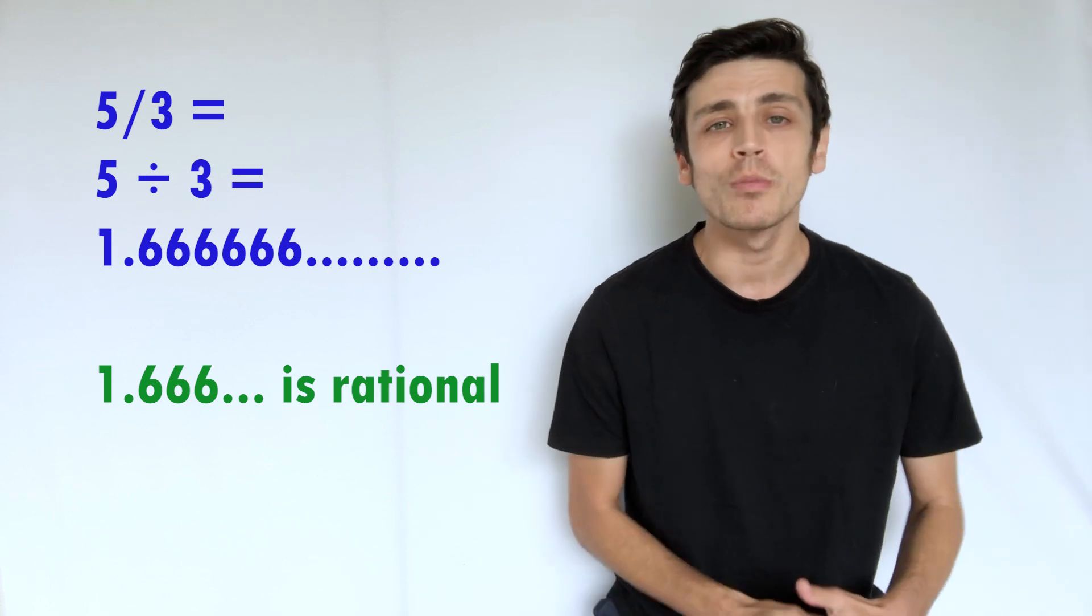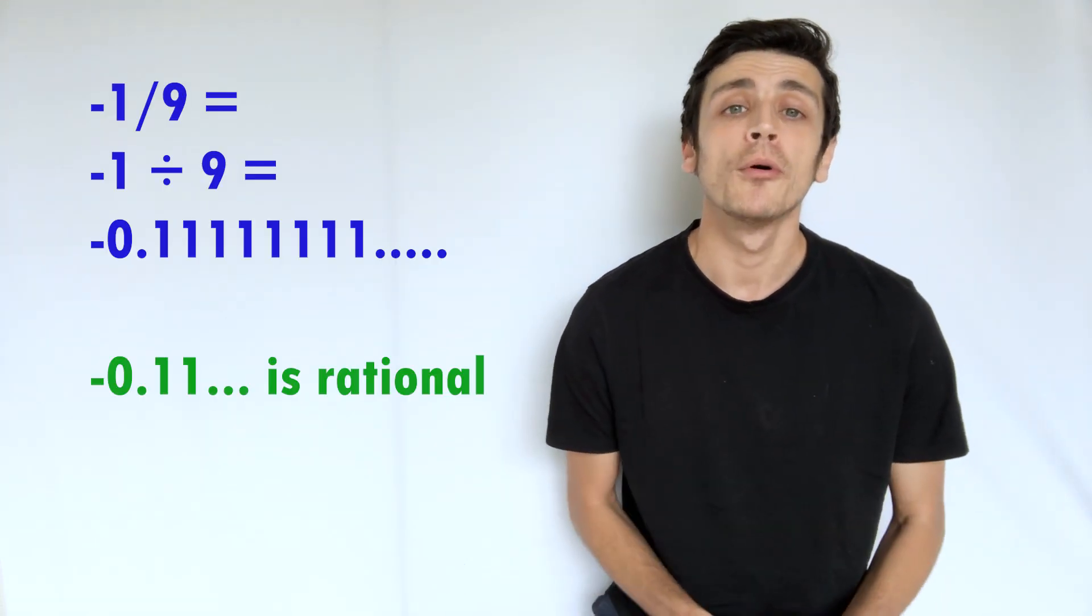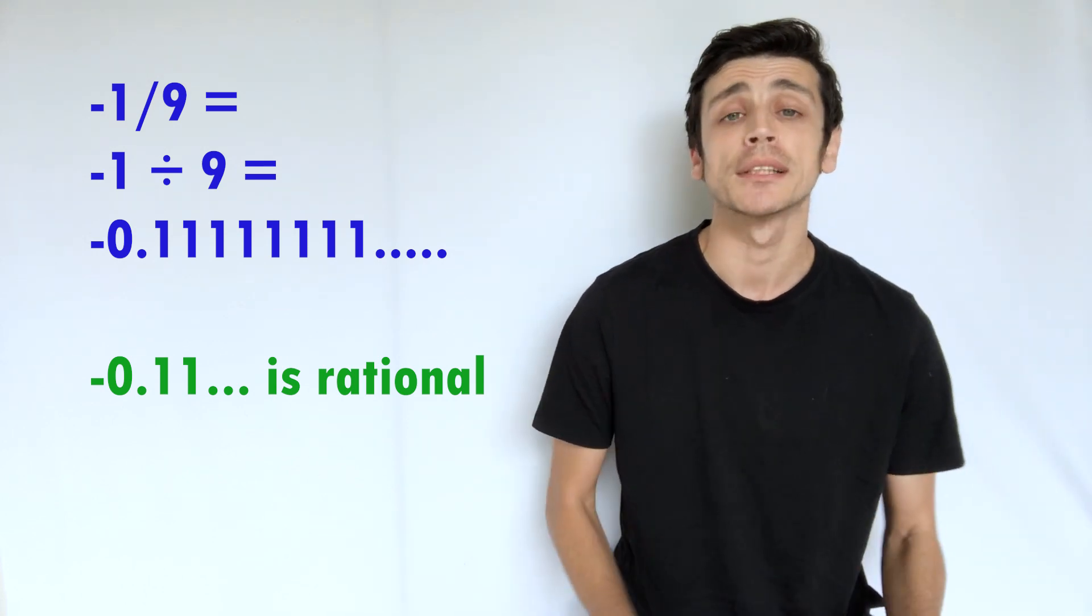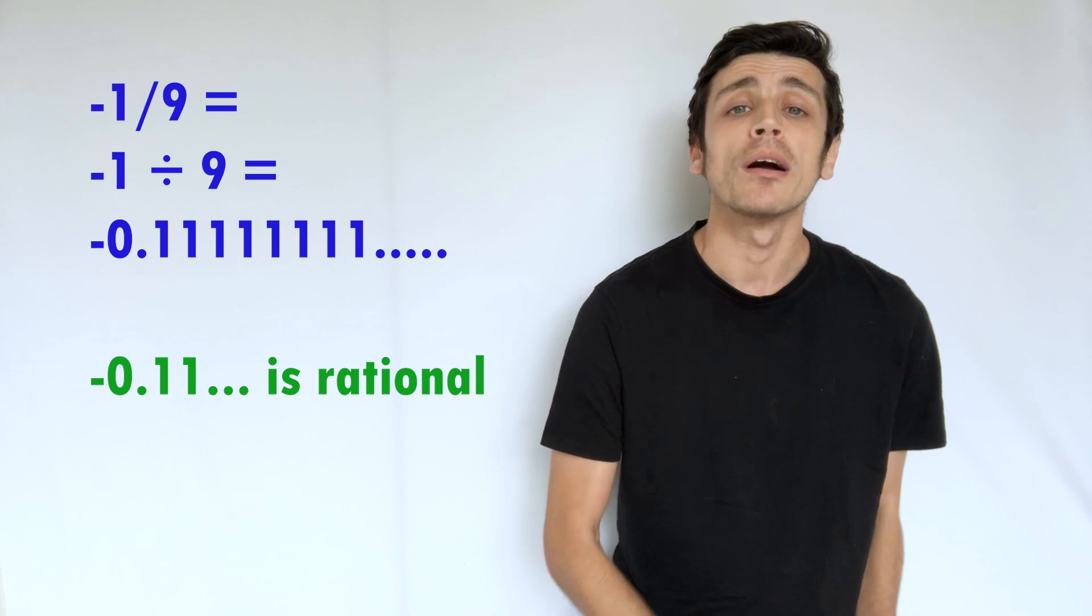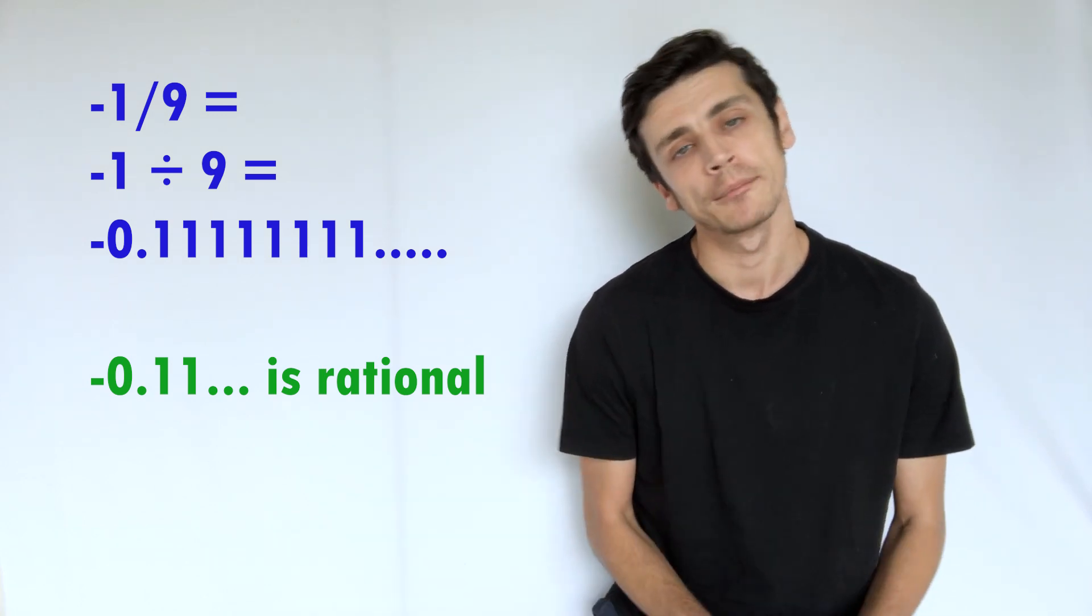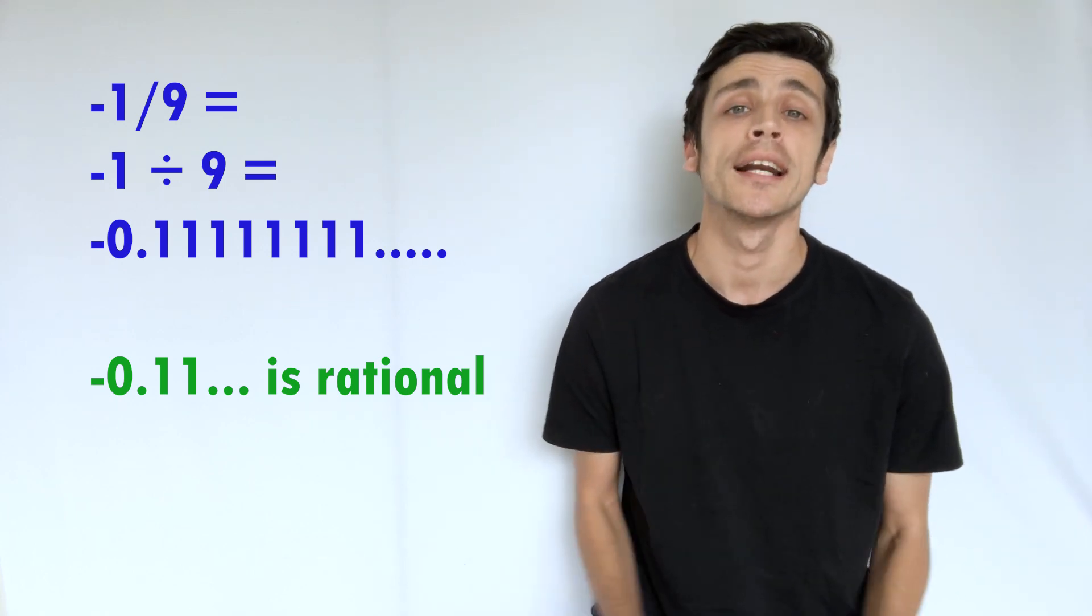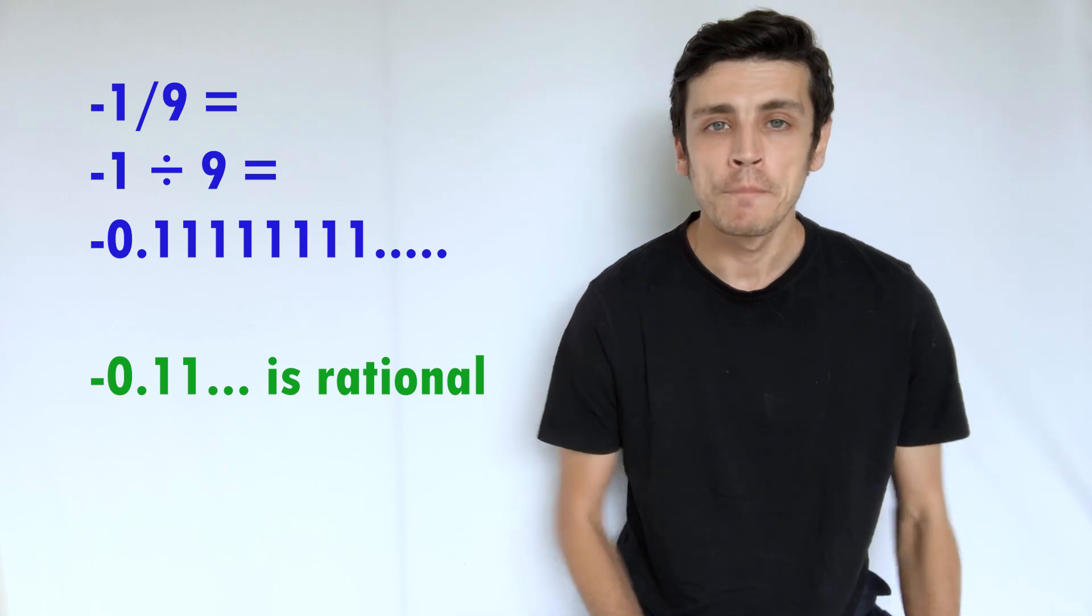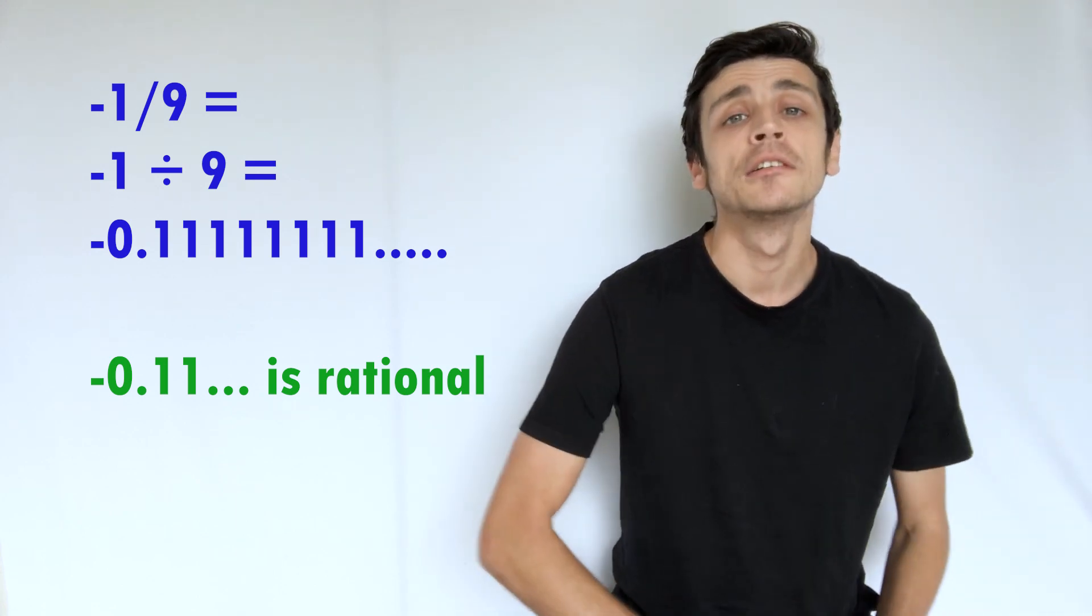And again you can do this with negative numbers as well. So if you had negative 0.1 recurring for example, this can actually be represented as negative 1 divided by 9 and you would still get your negative 0.11 recurring. So negative 1 over 9 is a fraction representation of this number, so therefore it is still rational.